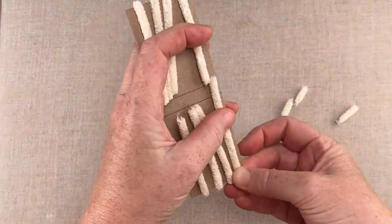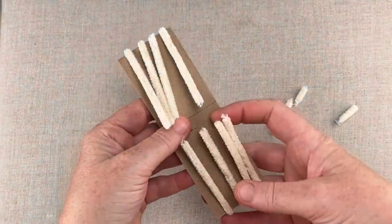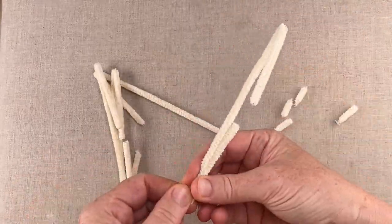Once you have the four pieces folded, you can remove them from the card and just tighten up the ends like I've done here.